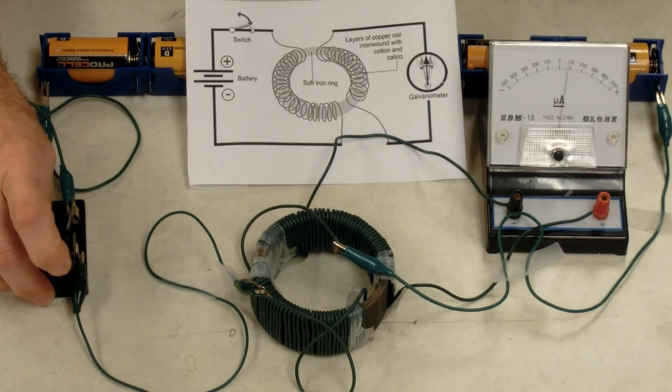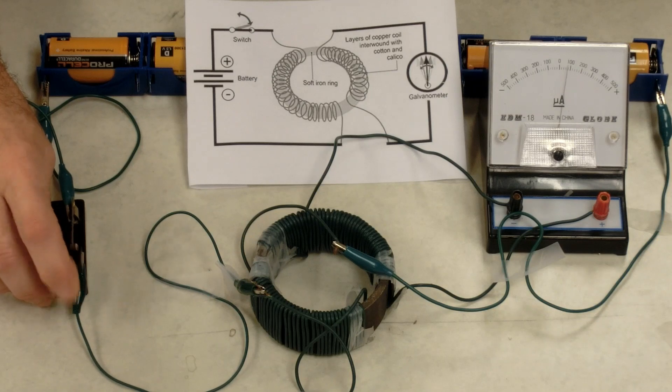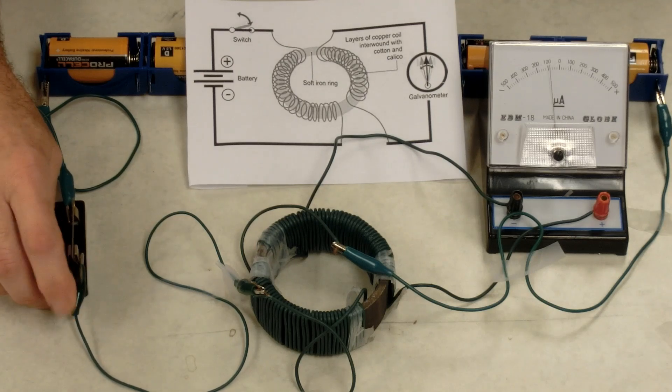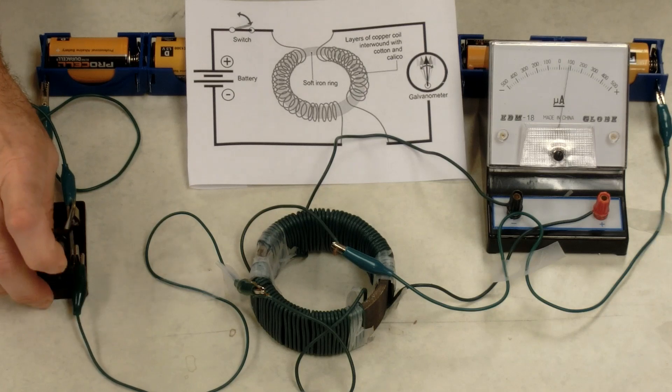This tells us that not only is the direction of the magnetic field movement important, but also the north-south polarity of the magnetic field is important. Reversing the magnetic field reverses the current direction.